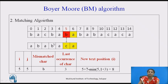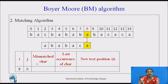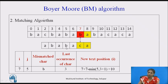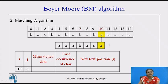With I at position 8 and J at 6, moving right to left, there is again a mismatch. J is 5 and I is 7; the mismatch character is B, last occurrence is 3, so the next position is 10 — this B aligns to B in the pattern. Again at I equal to 9 with J equal to 5, there is a mismatch, and we shift to position 12.